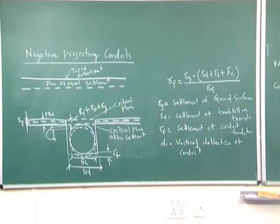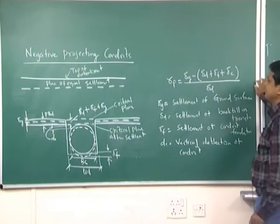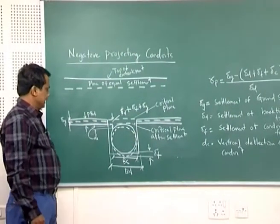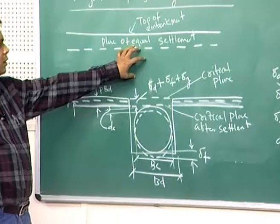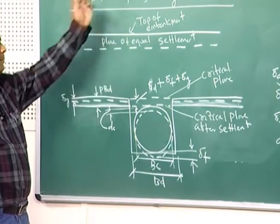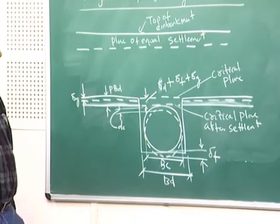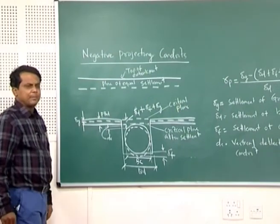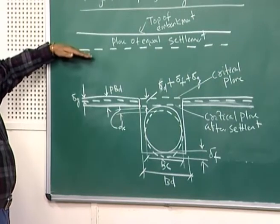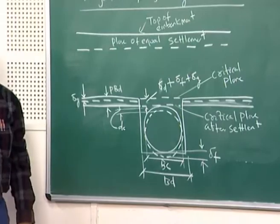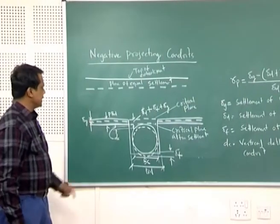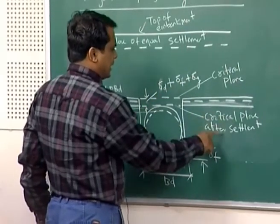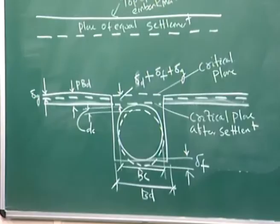For negative projecting conduits — for example, a culvert — there is a plane of equal settlement below the top of the embankment and a critical plane. From the plane of equal settlement to the top of the embankment, all settlement should be equal. Below that, there are four types of settlement: δG (ground surface settlement), δD (backfill in trench), δF (conduit foundation settlement), and Dc (vertical deflection of conduit).